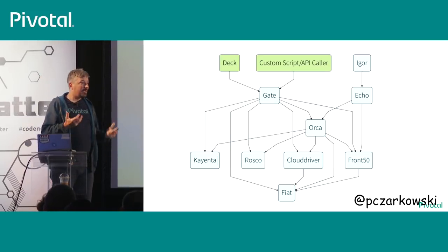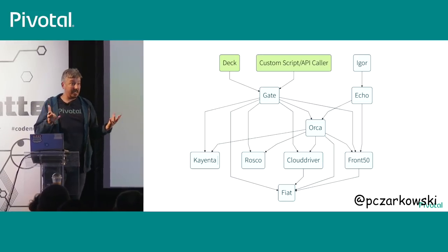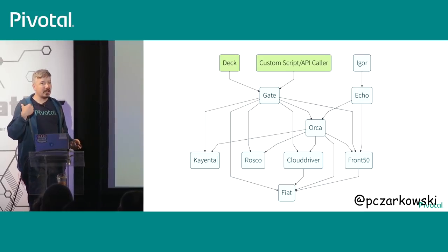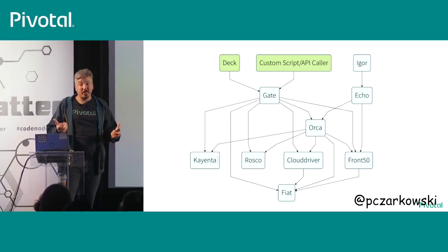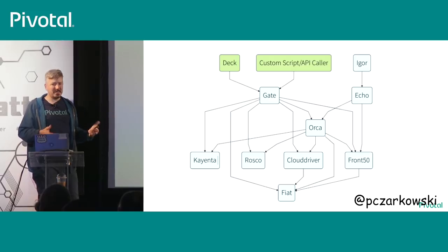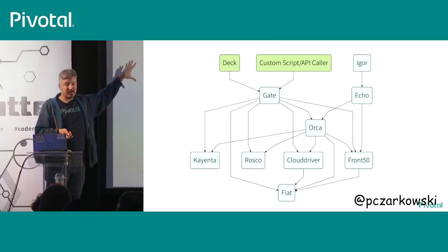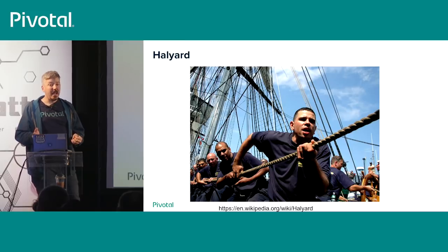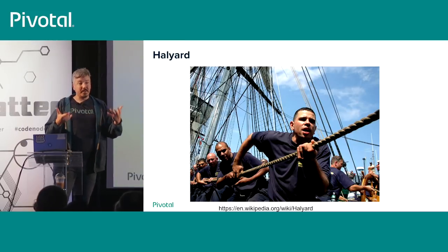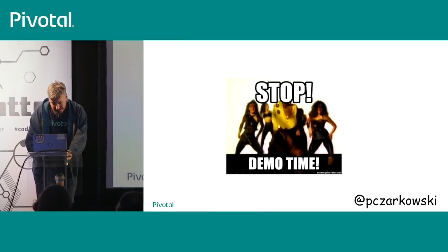Spinnaker came from Netflix who built about a dozen microservices to make it up. Running 12 microservices to run five or six of my own doesn't really compute — so folks in the open source community built Halyard, a tool that manages, deploys, and upgrades those Spinnaker microservices. Now I just do halyard install, and Halyard goes and installs Spinnaker for me. Then I can go to Spinnaker and start configuring it to run my application.